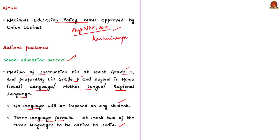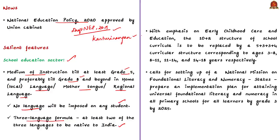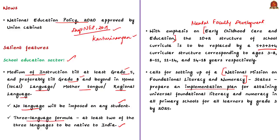The policy emphasizes early childhood care and education, as three to six years of age is crucial for the development of mental faculties. The 10+2 structure of school curricula is to be replaced by a 5+3+3+4 structure — 15 years total, meaning 12 years of schooling with 3 years of Anganwadi or preschooling. The policy recognizes foundational literacy and numeracy as an urgent prerequisite to learning and aims to set up a National Mission on Foundational Literacy and Numeracy. States will prepare implementation plans to achieve universal foundational literacy and numeracy in all primary schools by grade 3, targeted by the year 2025.